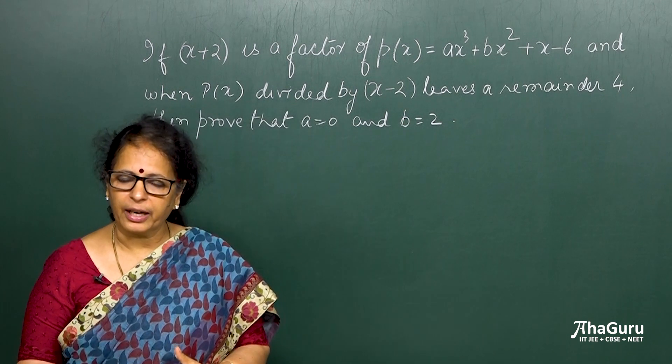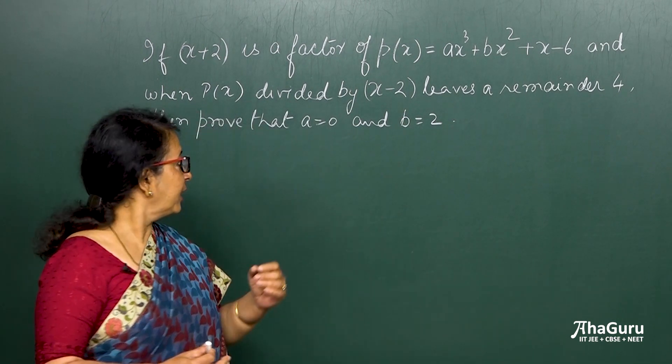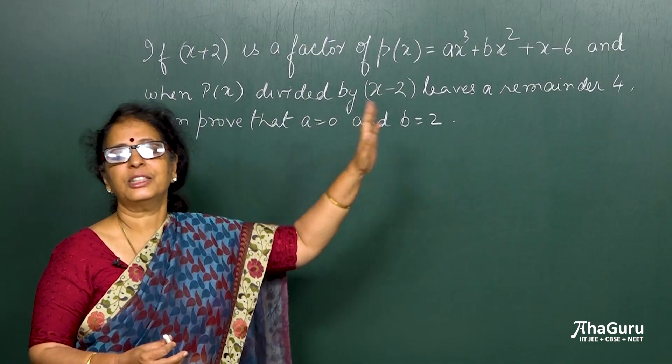When you say x plus 2 is a factor, that means the remainder is 0 actually. And when it is divided by x minus 2, which means x minus 2 is not a factor, hence we get a remainder.